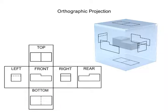The views are laid out in a pattern such that the top view will be located above the front, and the right-side view will be located to the right of the front, and so on. This convention makes it easy to understand which view is shown and how it's related to the other views.